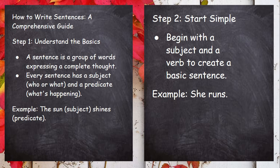Step 1: Understand the basics. A sentence is a group of words expressing a complete thought. Every sentence has a subject — who or what — and a predicate — what's happening. The subject is the who or what, and the predicate is what's happening.